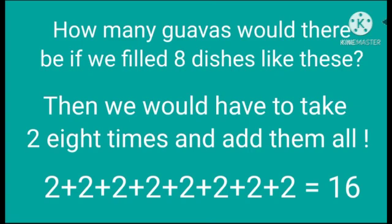How many gavahs would there be if we filled eight dishes like this? Then we would have to take two eight times and add them all: two plus two plus two plus two plus two plus two plus two plus two is equal to sixteen. But it took so long to add. So children, if we prepare some tables, we will be able to do such additions quickly.